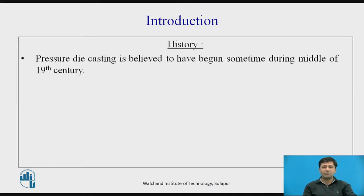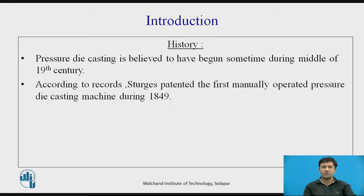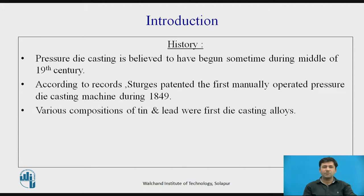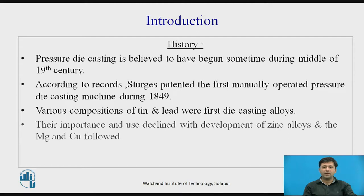First, the history. Pressure die casting is believed to have begun sometime during the middle of the 19th century. According to records, Sturges patented the first manually operated pressure die casting machine in 1849. Various compositions of tin and lead were the first die casting alloys, but their importance declined with the development of zinc alloys, followed by magnesium and copper.